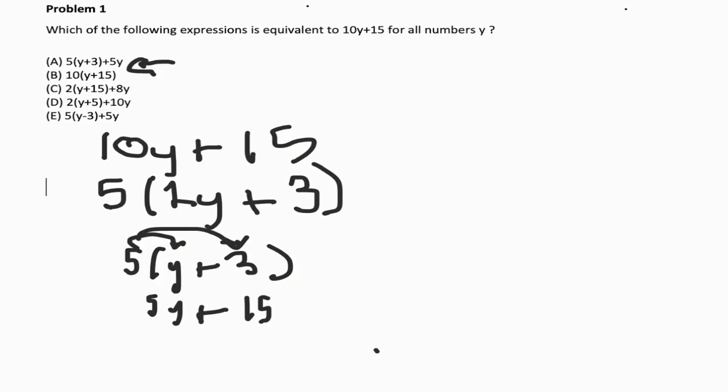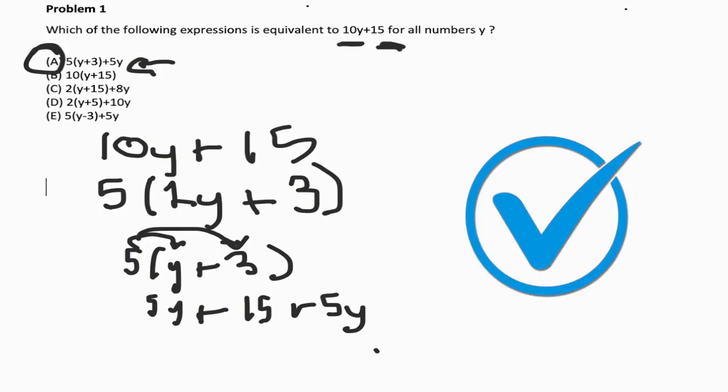But then the problem is giving us an extra plus 5y at the end. So 5y plus 5y is 10y, which brings us back to what we want, 10y plus 15. So the best answer there is answer choice A.